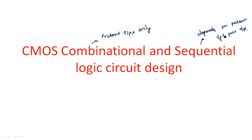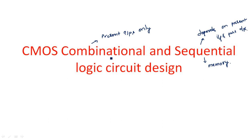A sequential logic circuit depends on present inputs and past outputs. In order to store the past outputs, we need a memory. So sequential logic circuits need a memory to store the past outputs. Wherever we have a memory element, that type of logic circuit comes under sequential logic circuits. If there is no memory and it works simply based on present inputs, it is a combinational logic circuit.